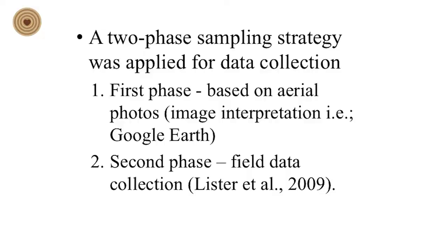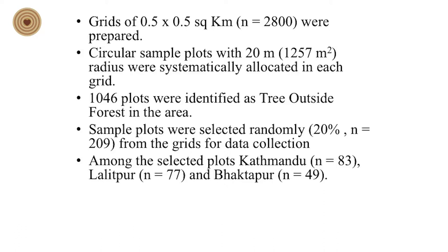For the method, a two-phase sampling strategy was applied for data collection. The first phase was based on aerial photos — that is, image interpretation using Google Earth. The second phase was based on field data collection according to Leser et al. 2009. For data collection, grids of 0.5 by 0.5 square kilometers were prepared, which resulted in 2,800 grids.